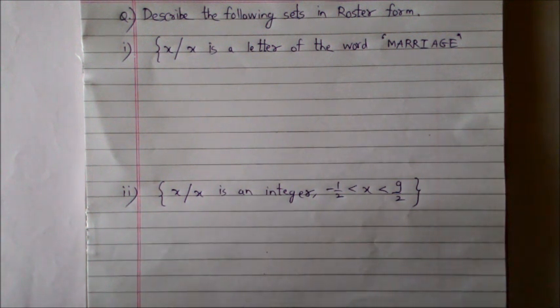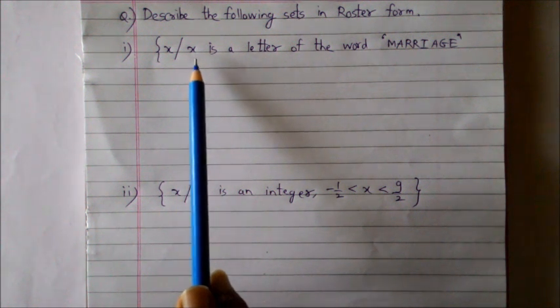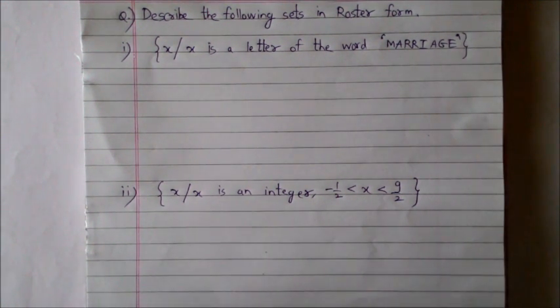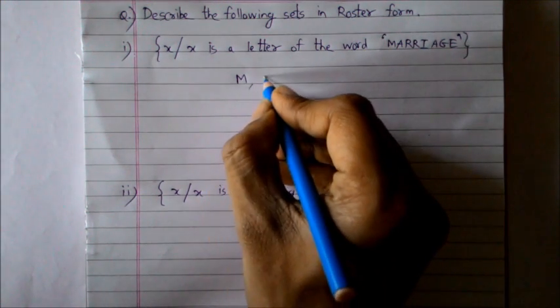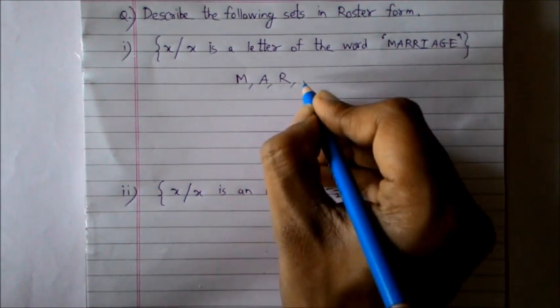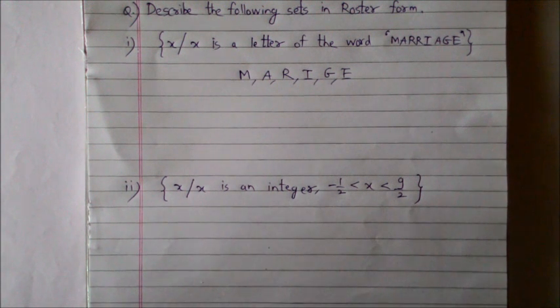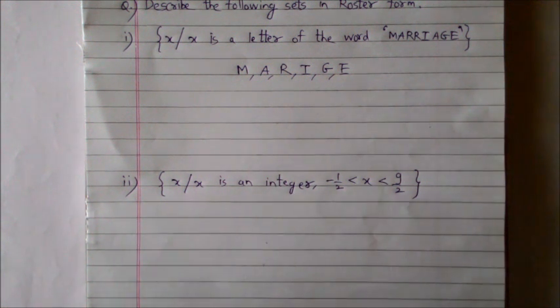Consider the first example which says the set of all those values of x such that x is a letter of the word marriage. Now one important thing to understand before solving this problem is a set cannot have duplicate elements. Thus if I write down all the alphabets which have been used in the word marriage, those will be M, A, R, I, G, and E. I have skipped one R and one A because both A and R are coming twice.